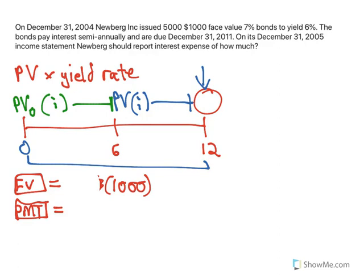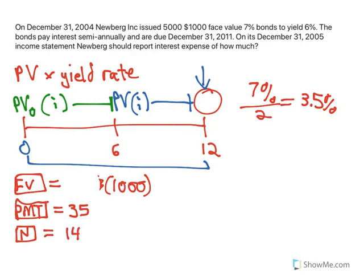The payment is based on the 7%, that's the coupon rate. So 7% divided by 2, because it's semi-annually, that's 3.5%, and 3.5% of 1,000 is a $35 coupon payment. The number of payments there will be will be 14, because it's over a 7-year period twice per year. And the last thing is the interest rate, or the yield rate. That's the 6% divided by 2, so we enter that as 3 for 3%.